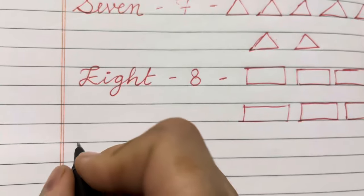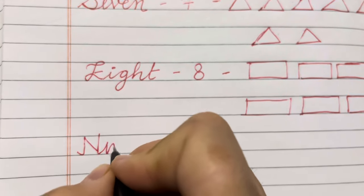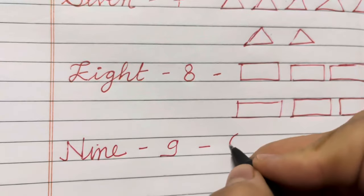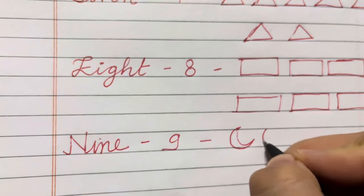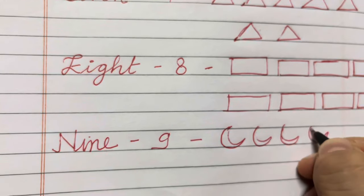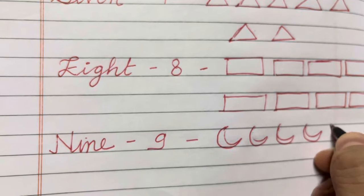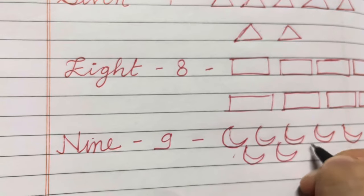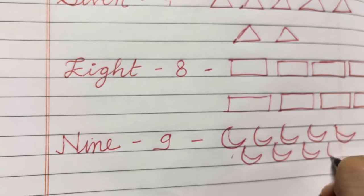Nine. Nine moons. One, two, three, four, five, six, seven, eight, nine.